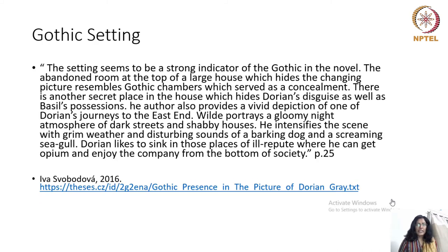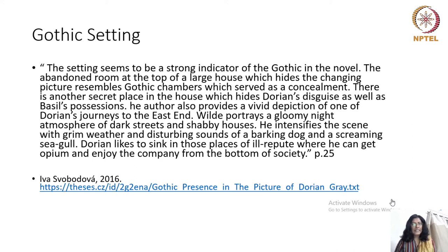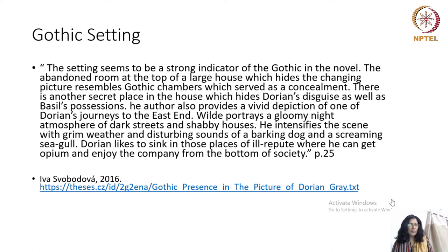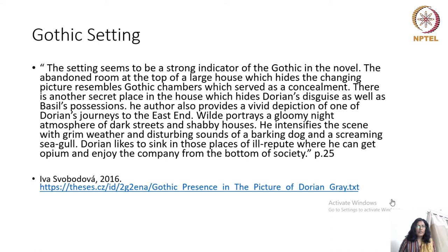The Gothic setting is a strong indicator throughout the novel. The abandoned room at the top of the large house, which hides the changing picture, resembles Gothic chambers used for concealment. There is another secret place in the house hiding Dorian's disguises as well as Basil's possessions. Wilde provides a vivid depiction of Dorian's journeys to the East End, portraying a gloomy night atmosphere of dark streets and shabby houses, intensified by grim weather and disturbing sounds of a barking dog and a screaming seagull. Dorian likes to sink into those places of ill repute where he can get opium and enjoy the company from the bottom of society.